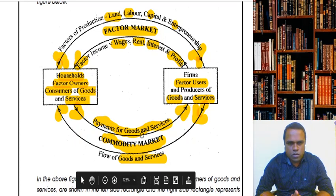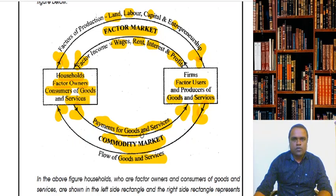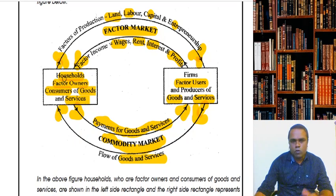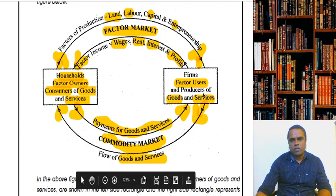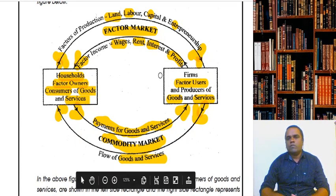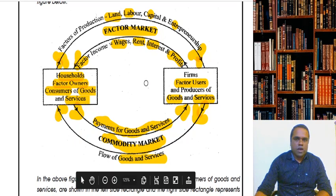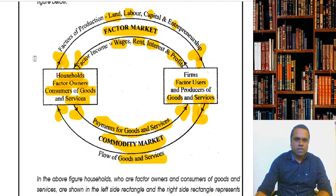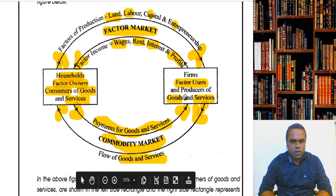So we saw that the firm's costs — wages, rent, interest, profit — become income for households. And the household's cost — payment for goods and services — becomes income for the firms. So the money that goes out comes back to the firms. For example, if firms paid households 5,000 rupees, and households spent 4,000 rupees on goods and services, then 4,000 rupees returns to the firms as income.